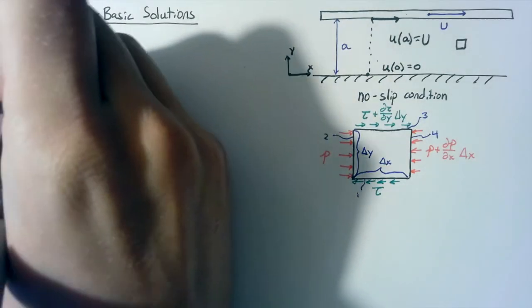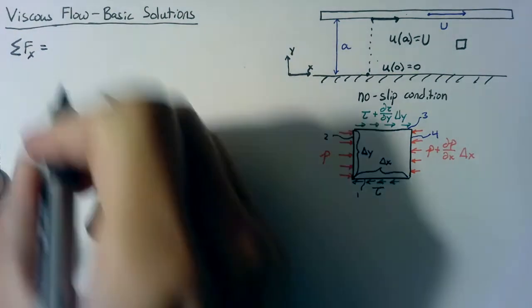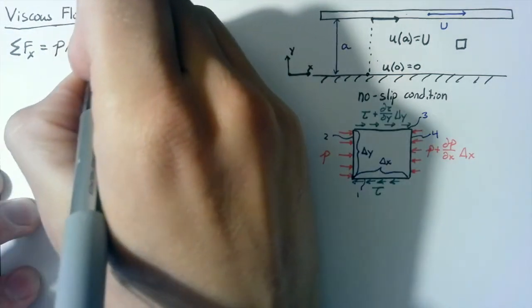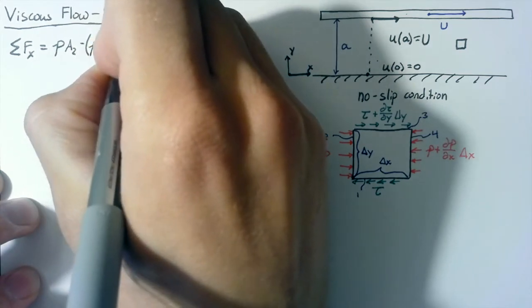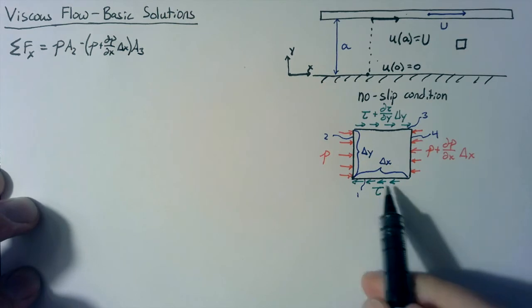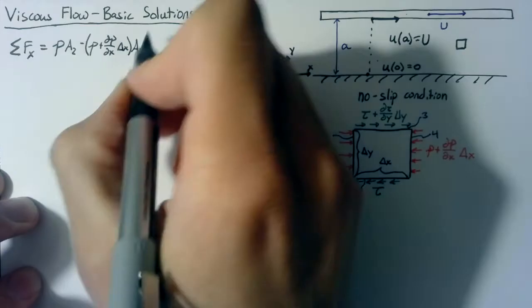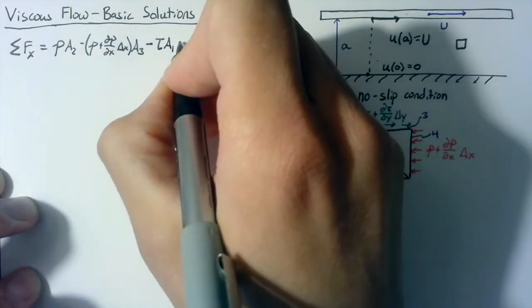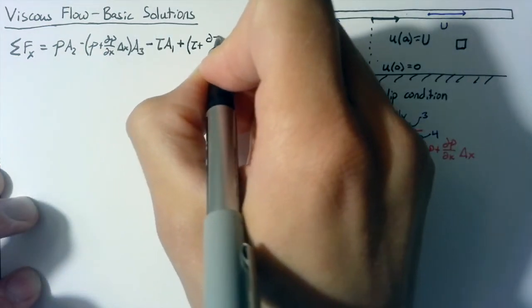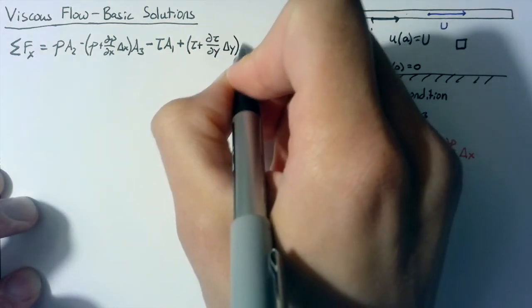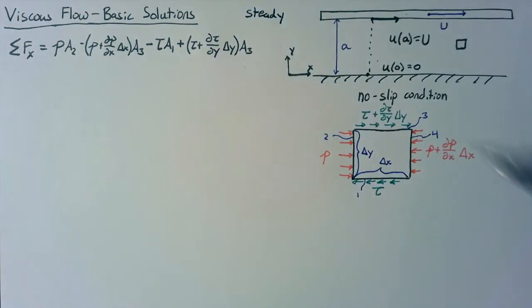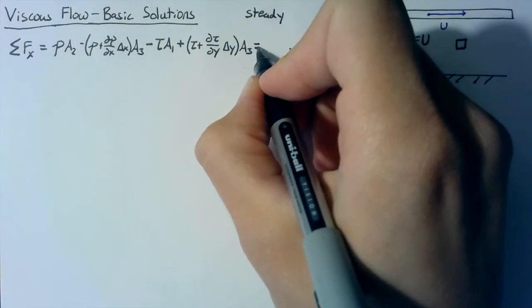And we're only looking at the sum of the forces in the x direction. So to start off, we have a pressure on the left hand side. So that's p times a2 minus this other pressure on the right hand side, p plus dp dx delta x times a3. And it's negative because it's pushing to the left. And then this shear force on the bottom is pushing to the left as well. So we have a negative tau times a1. And then the force on the top is pushing to the right. This will be plus tau plus d tau dy times delta y all multiplied by a3. And we're going to restrict our flow field to be steady. And what that means is that even though we have some velocity, we're not going to have any accelerations within our flow field. So we can set this force balance equal to zero.